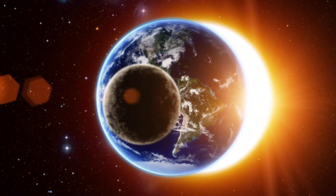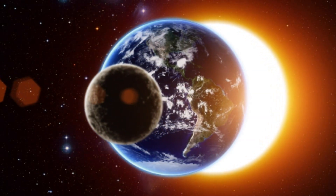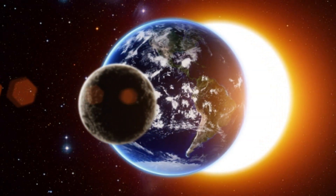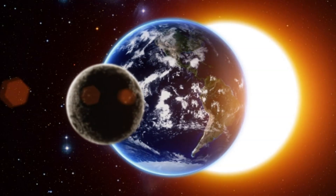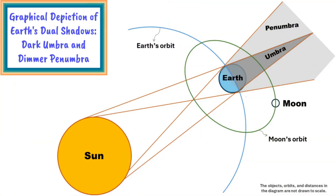This phenomenon can only transpire during a full Moon, when the Moon is near a lunar node, which influences the nature and duration of the eclipse. The diagram effectively illustrates the Earth's shadow, comprising two distinct parts: the dark umbral shadow and the dimmer penumbral shadow. The umbra, the core of the shadow, is where the Earth entirely blocks direct sunlight.